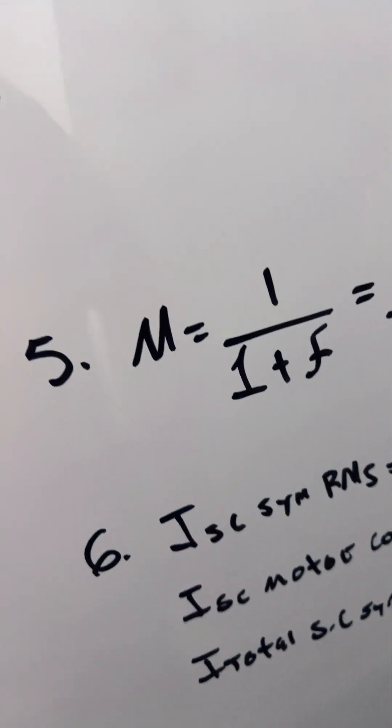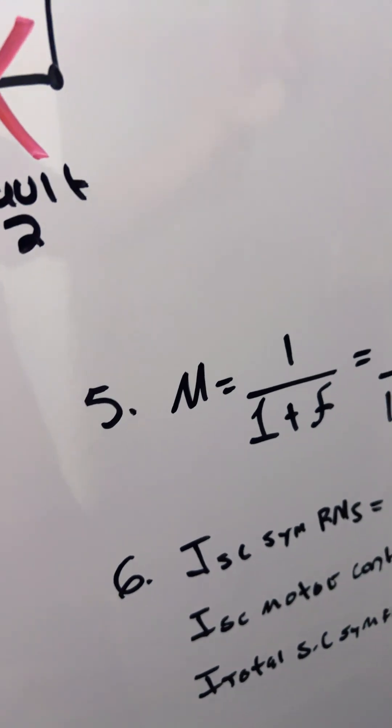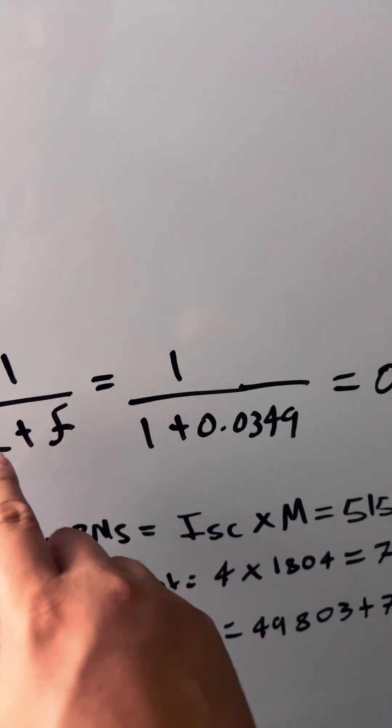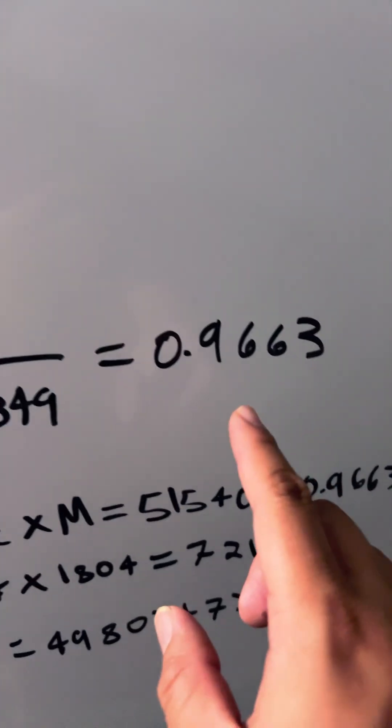Then we calculate the multiplier using 1 over 1 plus F, which gives us 0.9663.